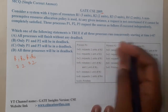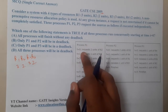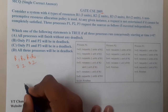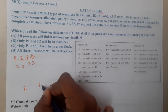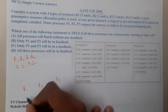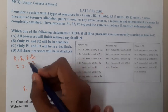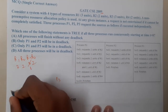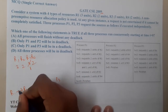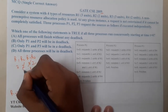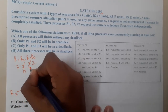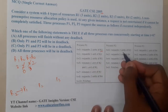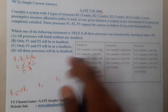Let us solve this step by step. At time zero, P1 requests 2 units of R2. We allocate 2 units to P1, leaving 1 unit of R2 remaining in storage. This allocation step is complete.